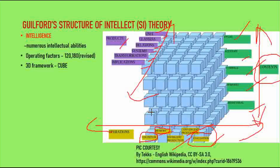Coming to the Products dimension: Unit is a single item of information or knowledge. Class is a set of items. Relation is the connection between items or variables. System is the organization of items or networks. Transformation is the change or conversion of knowledge, such as reversing the order of letters in a word. Implication is the anticipation of knowledge. These are all the terms to remember in this 3D framework of Contents, Operations, and Products.